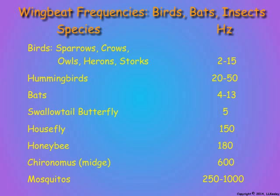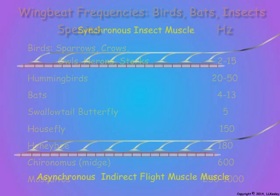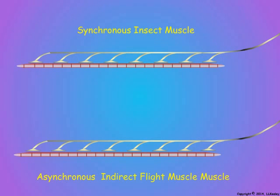Earlier we compared wingbeat frequencies for birds, bats, and insects and saw that some fast-flying insects such as flies, mosquitoes, wasps, and bees have wingbeat frequencies of one hundred to more than one thousand hertz. Let us see what physiological modifications insects have developed to allow such extreme rates of wingbeat. One adaptation is the way the indirect flight muscles respond to nervous control.